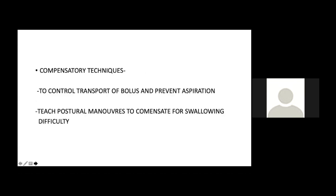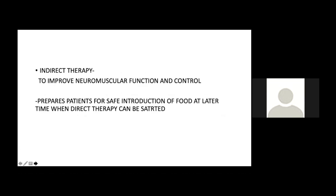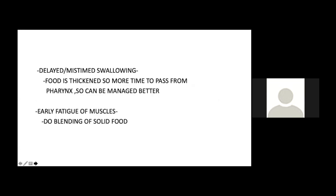Indirect therapy improves neuromuscular function without food and prepares the patient for safe food introduction. Direct therapy is performed with food. In mistimed or delayed swallowing, food is thickened to allow more time for laryngeal closure. If early muscle fatigue is present — as in motor neuron disease — solid foods can be blended to reduce effort.